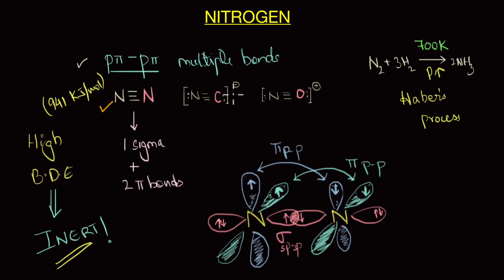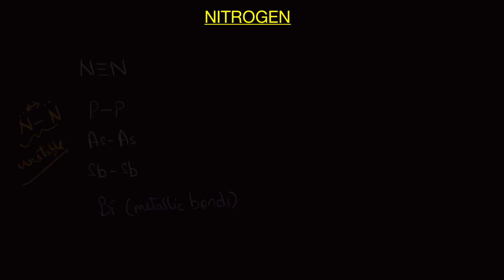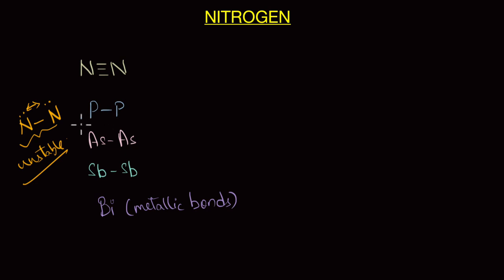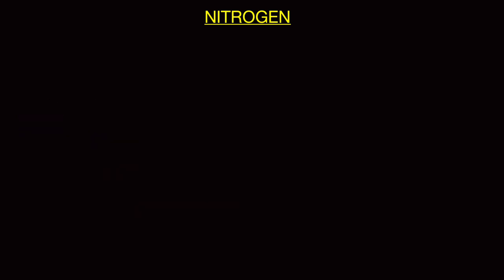This is the second part of our video on the special case of nitrogen. In the last video we saw some interesting properties of nitrogen. We discussed the unique ability of nitrogen to form p-pi-p-pi multiple bonds with itself, which is not present in the higher elements like sulfur, selenium, or tellurium. We also saw that when you compare a single nitrogen bond, that is single N-N bond, with the single bonds of the other elements, the single N-N bond is actually weaker because of the small size and higher inter-electronic repulsions.